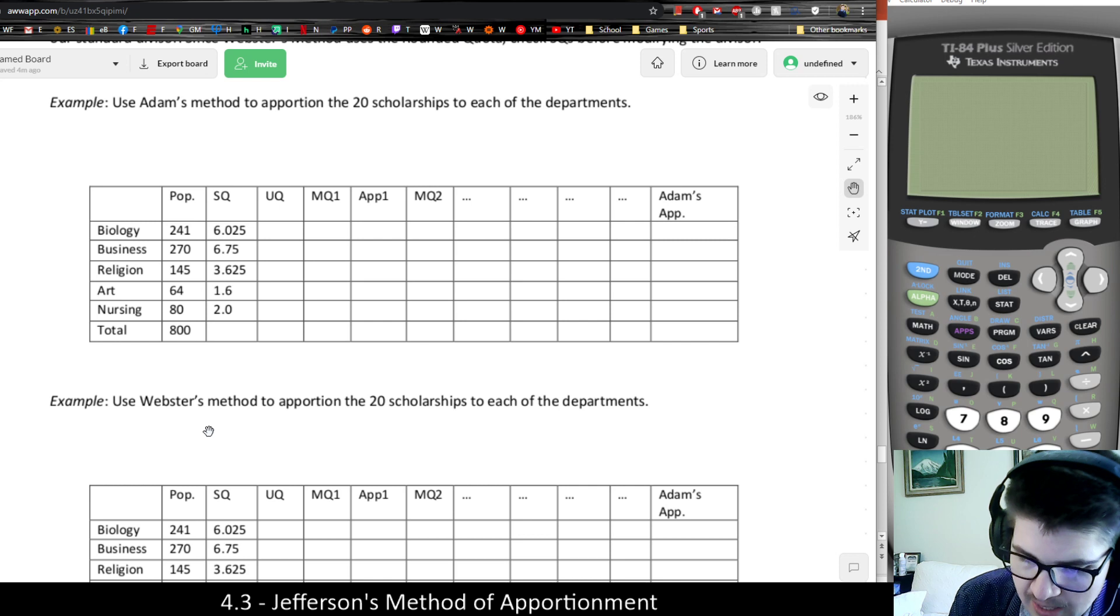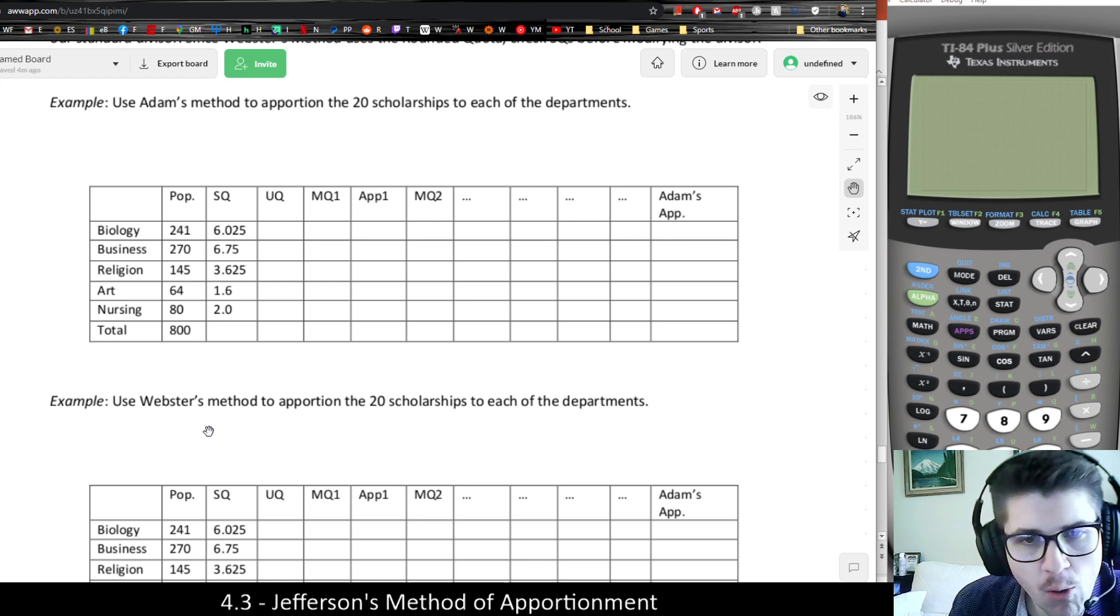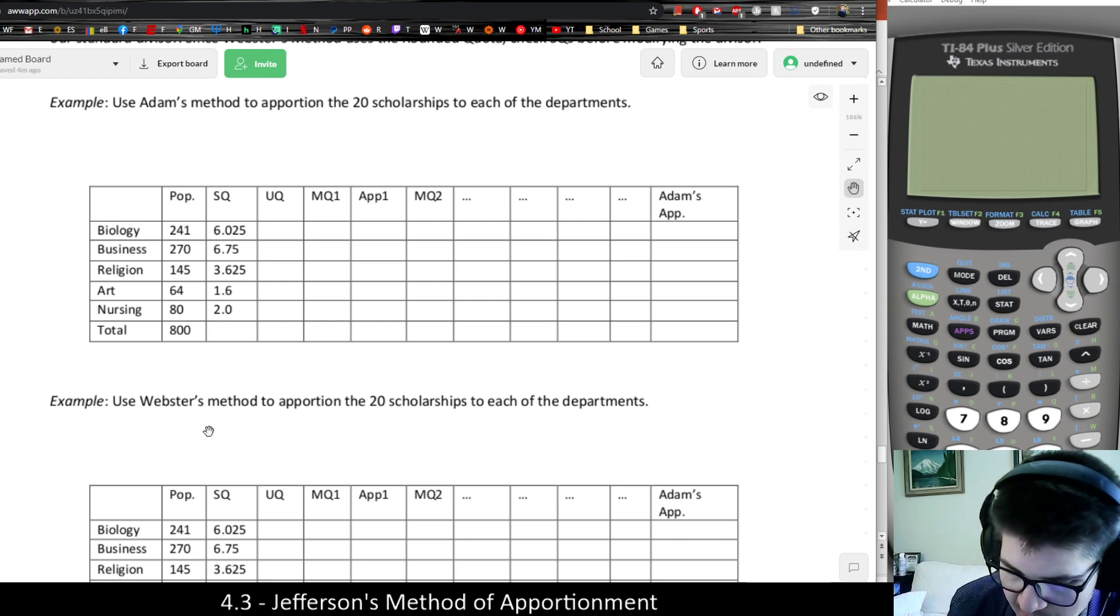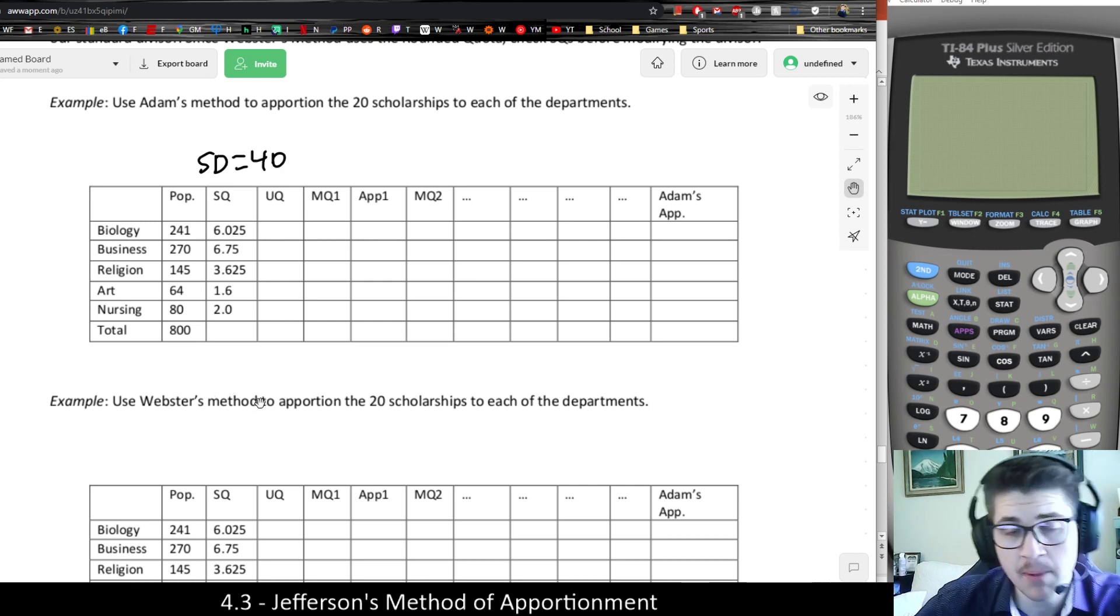It's always the same in that you always start with the standard divisor. You always calculate the standard quotas. Since we've done that already, I've already filled that information here. First step, take the total population, divide by the number of seats. That will give you your standard divisor. You divide through by the standard divisor, figure out what that gets you.